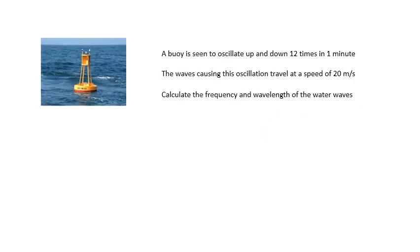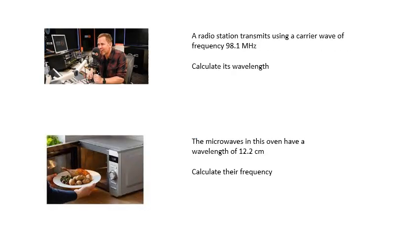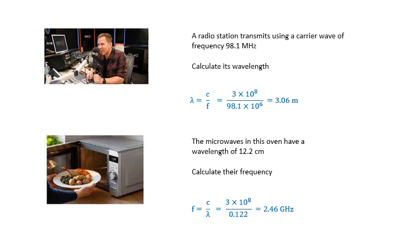Another example — have a go at this yourself. Just using these equations; make sure you do these examples and get used to them. And a couple more which involve electromagnetic waves. So lambda is C over F this time, and in the bottom one F equals C over lambda, where C is 3 × 10⁸ — the speed of electromagnetic waves in a vacuum. Electromagnetic waves in air travel at pretty much almost exactly the same speed — just a tiny, tiny bit less.